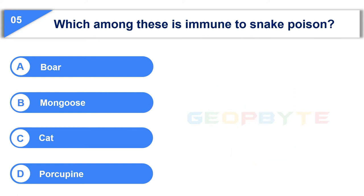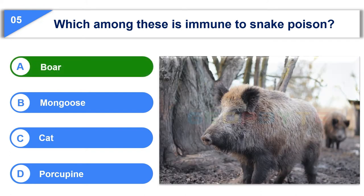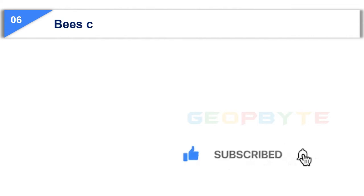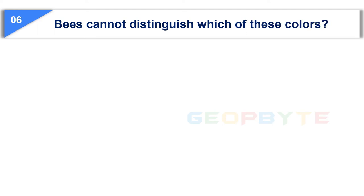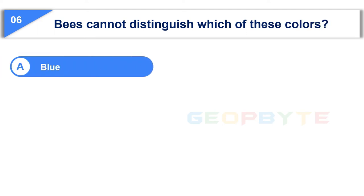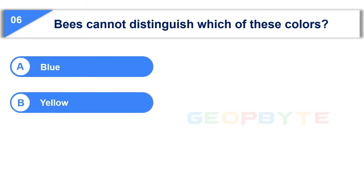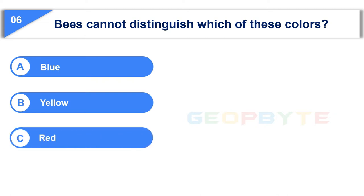Your time is up and the correct answer is Option A: Boar. The sixth question is: bees cannot distinguish which of these colours? Option A: Blue. Option B: Yellow.